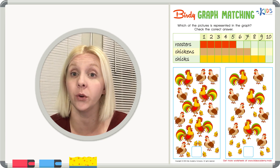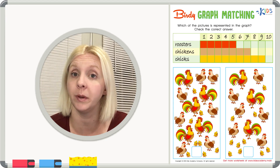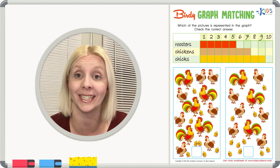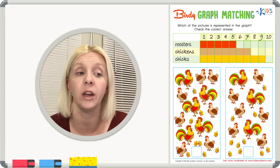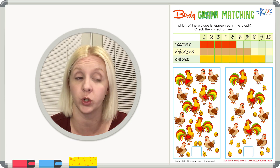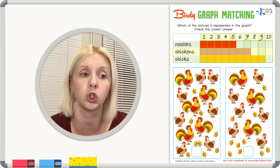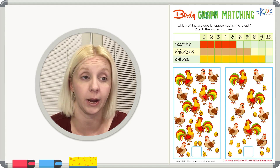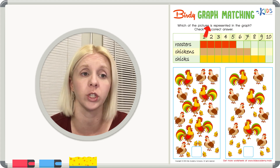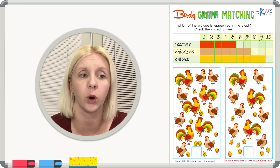Hello, welcome back! Today we're going to be looking at a worksheet called 'Birdie Graph Matching.' We're going to look at data or information in the form of a graph — a chart that gives us information with numbers. The things we're looking at are birds: roosters, chickens, and chicks. The directions say: which of the pictures is represented in the graph? Check the correct answer.